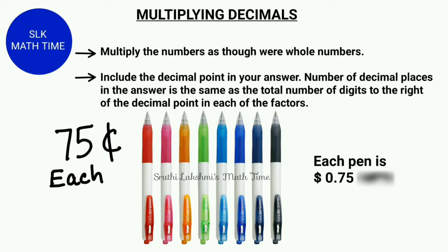We first multiply the decimal numbers as though they were whole numbers. Then we include the decimal point in our answer. But you may wonder, if we are multiplying the numbers as though they were whole numbers, wouldn't the answer be wrong? And how do we know where to put the decimal point? The number of decimal places in the answer is the same as the total number of digits to the right of the decimal point in each of the factors.